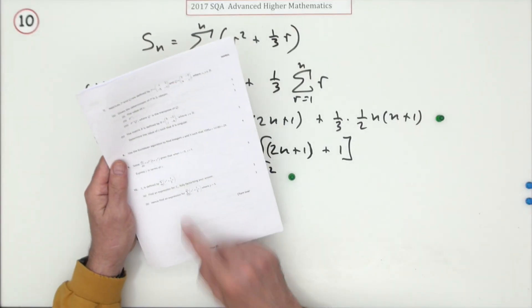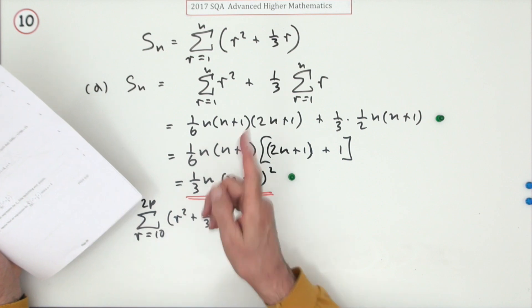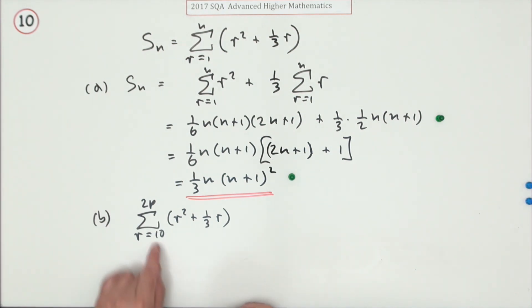And then part (b): hence find an expression for this going from r equals 10 to 2p. It says when p is greater than five, but it has to be, because if you're starting at 10 then you'd want that to be bigger than 10, unless you just get the first term. Well, that's the problem with starting at 10.